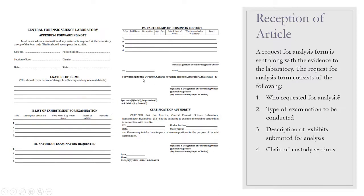Not only is there an oral exchange of information, there will also be a paper exchange of information. That paper exchange includes three parts: the first is the forwarding note and the chain of custody. The forwarding note consists of who is sending it, from where they are sending it, and from which crime they are sending it. The letter of advice contains information about what the evidences are, how they are packed, whether there is any hazard when opening them, and how they were collected.